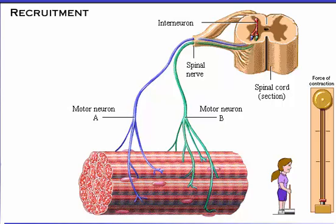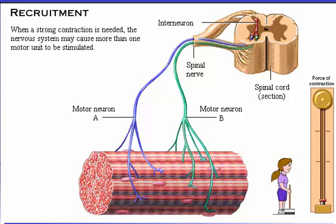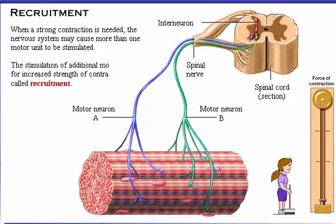Now let's look at the phenomenon of recruitment. When a strong contraction is needed, the nervous system may cause more than one motor unit to be stimulated. The stimulation of additional motor units for increased strength of contraction is called recruitment.